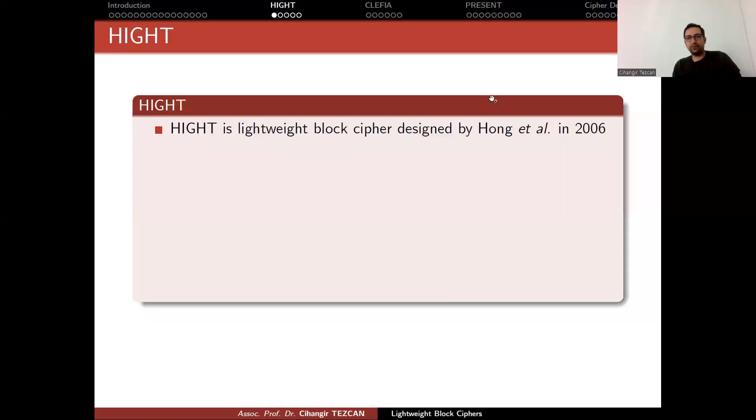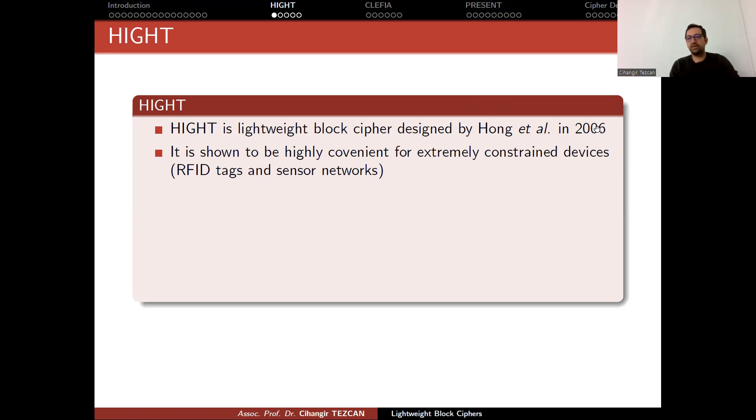Okay, so let's start with our first example, HIGHT block cipher. HIGHT is a lightweight block cipher designed by Hong et al. in 2006. I think it was in CHES 2006 conference. It is shown to be highly convenient for extremely constrained devices like RFID tags and sensor networks.